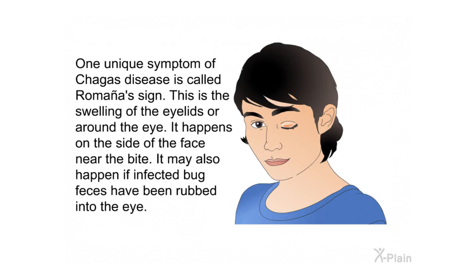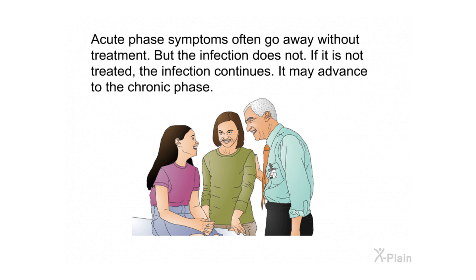One unique symptom of Chagas disease is called Romaña's sign. This is the swelling of the eyelids or around the eye. It happens on the side of the face near the bite. It may also happen if infected bug feces have been rubbed into the eye. Acute phase symptoms often go away without treatment, but the infection does not. If untreated, the infection continues and may advance to the chronic phase.